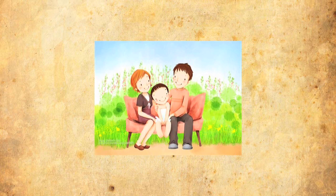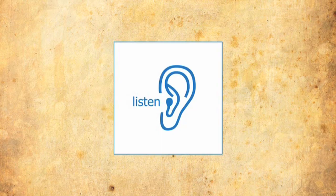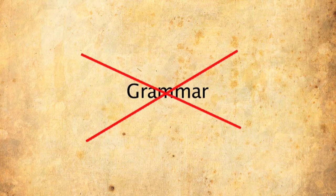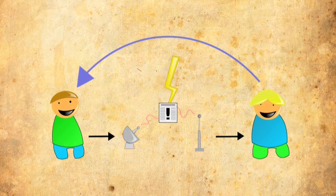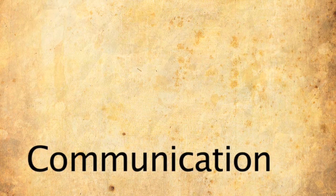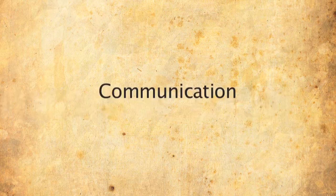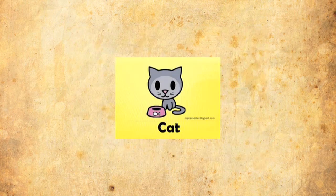There is an emphasis on exposure and on input. The central component of language is not grammar — it is communication. Language is viewed as a vehicle for communicating meanings and messages. The lexicon for both perception and production is considered critical in the construction of messages.